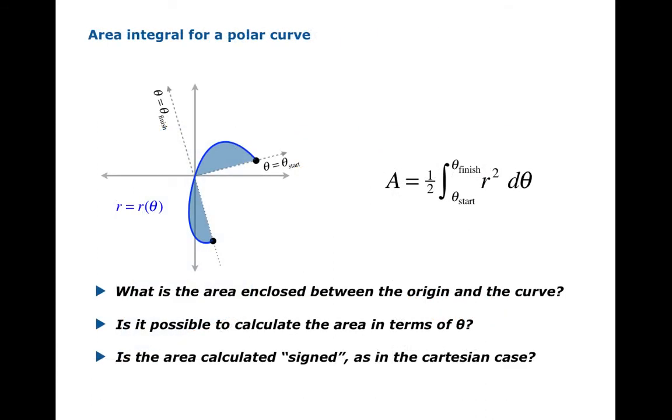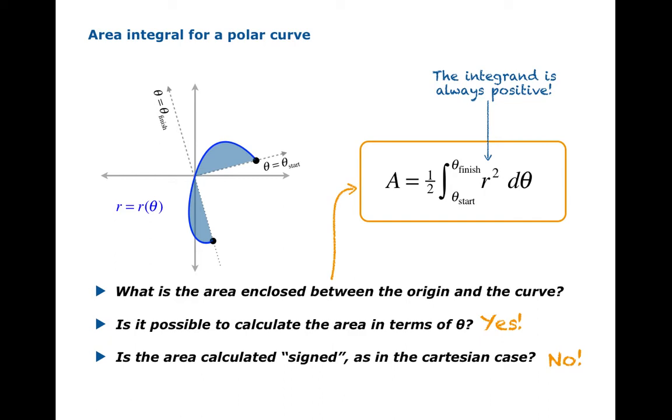So we have our answer to the question. What's the area enclosed? We have an integral formula that gives us the area enclosed. Is it possible to calculate in terms of theta? Sure. Everything in that boxed formula is in terms of theta. R is given to us in terms of theta, presumably. So the answer is yes. And is the area calculated? Is that going to be signed in any sense? And we'll notice, even in the picture on the left, R is negative. But the integral is of R squared. So we're always accumulating some non-negative contribution. So because the integrand is always non-negative, in fact, there's no negative contributions ever. So every time we integrate, we're going to be contributing positively. So there's no signed area. Now this can cause a problem, as we'll see with examples later.